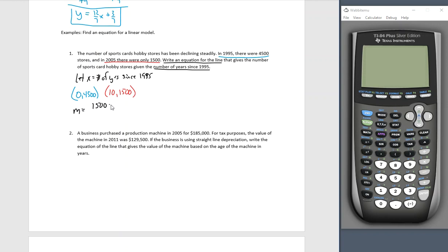And then we go back and the first sentence gives us a hint about what we should find in our slope. The hobby stores are declining steadily. If we want a linear model we should have a negative slope. Let's find out. 1,500 minus 4,500 all over 10 minus zero. That's a negative 3,000 all over 10. That's a negative 300. So our slope is a negative 300.